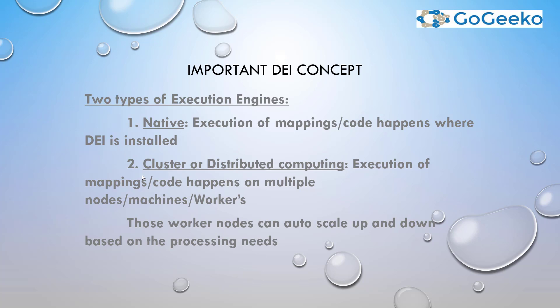There are mainly two types of execution engine. The first is native execution, where mappings or code run where DEI, IDQ, or PowerCenter is installed. The second is cluster or distributed computing, which is where the power of DEI or BDM comes into play. In cluster mode, execution of mappings happens on multiple nodes or worker machines that can auto-scale up and down based on processing needs.